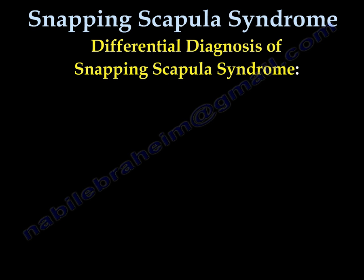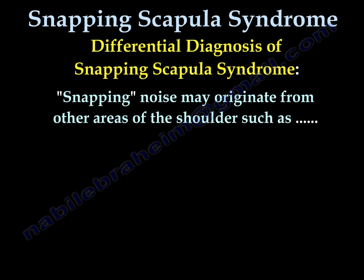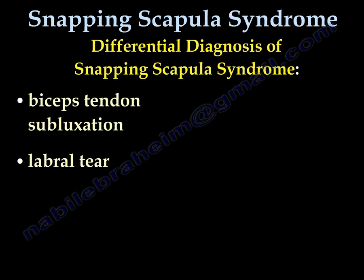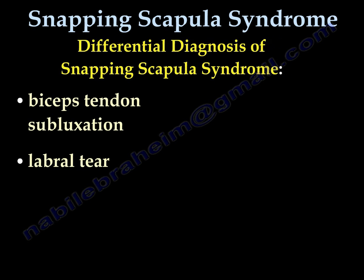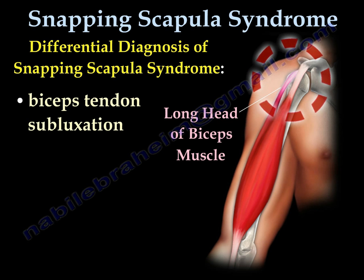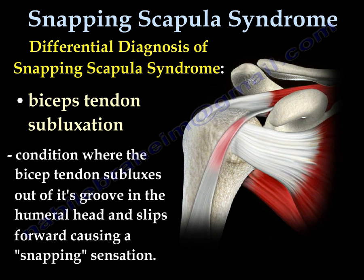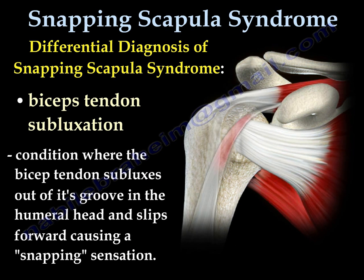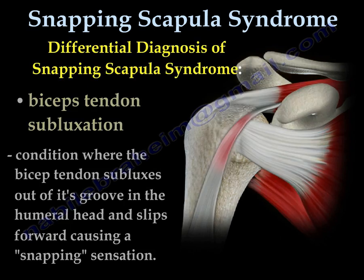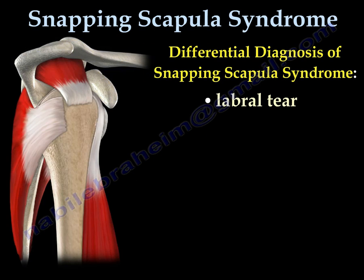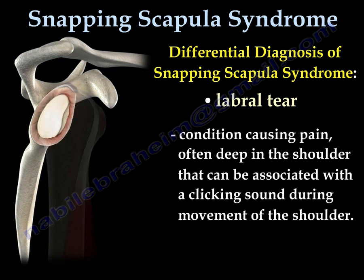What is the differential diagnosis for feeling a click in the shoulder or in the scapular area? The snapping noise may originate from other areas of the shoulder beside the shoulder blade, such as biceps tendon subluxation and labral tear. In biceps tendon subluxation, the biceps tendon will sublux out of the groove, causing a snapping sensation in front of the shoulder. A labral tear may also cause a clicking sound during movement of the shoulder.